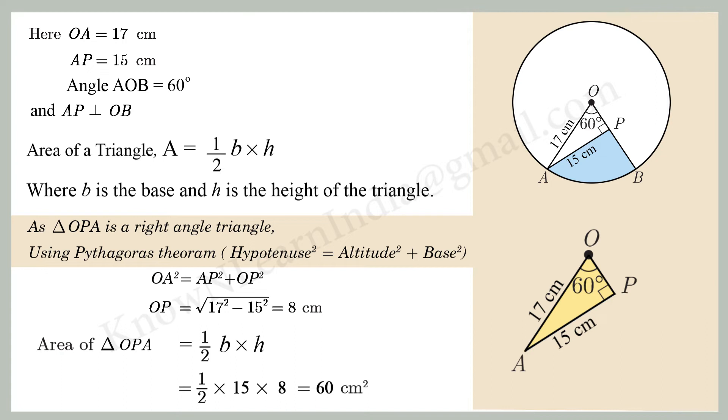As per Pythagoras theorem, hypotenuse square is equal to altitude square plus base square. Applying Pythagoras theorem in the right-angled triangle OPA, OA square equal to AP square plus OP square. Then we can find OP equal to square root of 17 square minus 15 square equal to 8 centimeter.